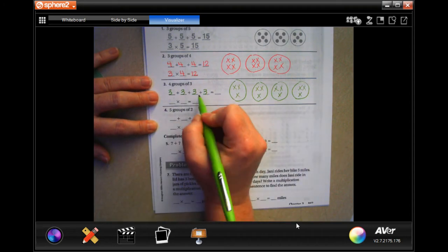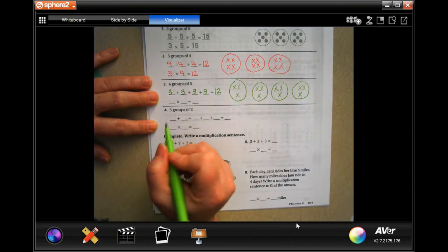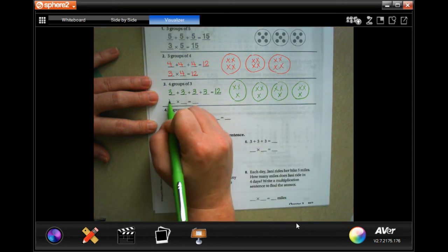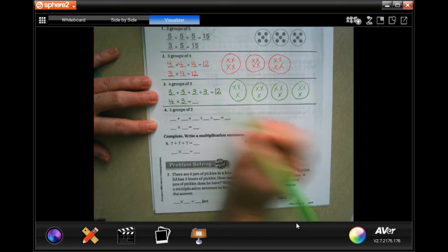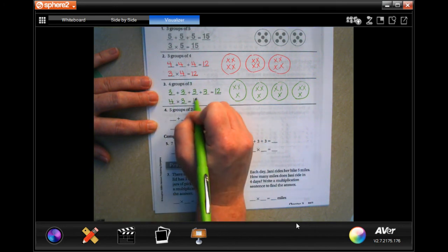Three plus three is six, plus three is nine, plus three is 12. And one, two, three, four groups of three in each one. And three times four is 12. So four times three is also 12.